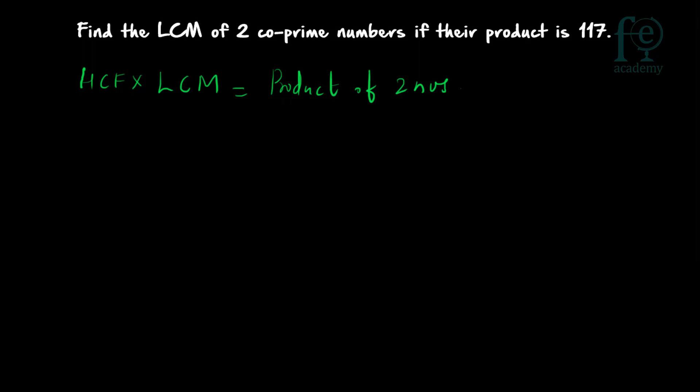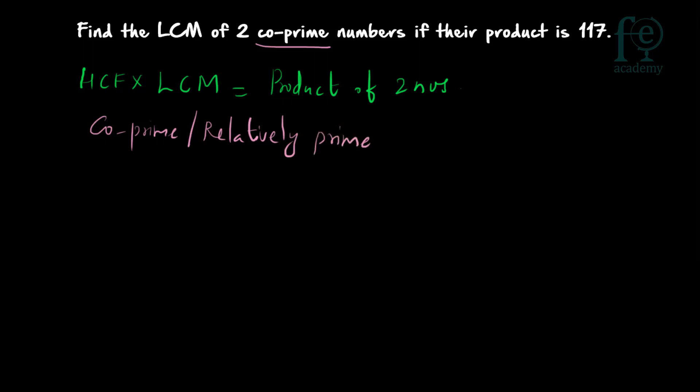The LCM is what you have to find out — what is the lowest common multiple of the 2 numbers? The product is already given as 117. An important term here is co-prime. What do you mean by co-prime? Co-prime, or relatively prime — 2 numbers are said to be co-prime if their highest common factor (HCF), also called GCD, is equal to 1. They are not having any common divisor other than 1.